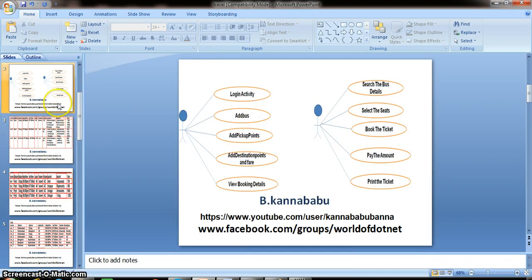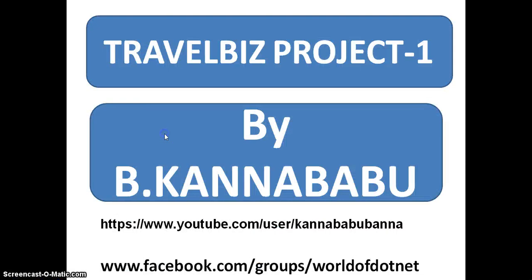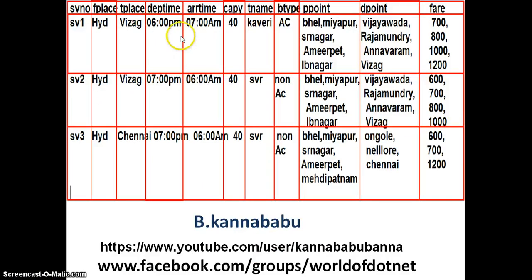In order to develop any project, first of all we need to gather the data depending on the requirement. Here I gathered the data — that is the bus details like service number, from place, to place, departure time, arrival time, capacity, travel agency name. The main aim of developing this website is that all travel agencies like KCNA Travels, Cauvery Travels, or SVR can register into our website, and the customer can open this website and book tickets for any type of bus — not only for a specific bus.